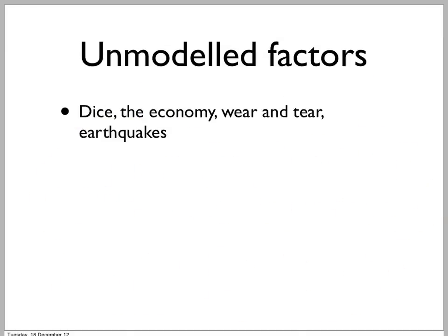Perhaps the worst form of uncertainty are unmodelled factors — what a certain American vice president called 'unknown unknowns.' Let's say you're rolling a dice: it flies through the air and bumps on the ground. In principle you can calculate which face will land upright — it depends on exactly how you throw it, the air currents, the roughness of the table — but we don't know those things. So even though it's not truly a random process, it effectively is, because there's a whole bunch of things we can't model.